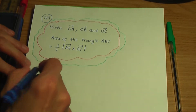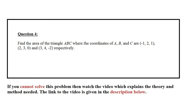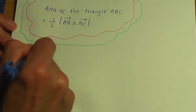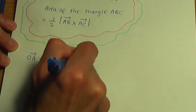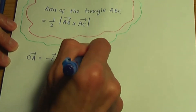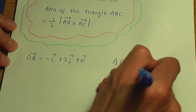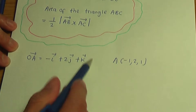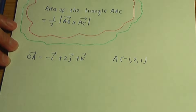Let's work out the vectors AB and AC. Going back to the screenshot, we have A, B and C in coordinate form. A is written as the point minus 1, 2, 1. Going back to the paper and pen, that means that the vector OA is minus I plus 2J plus K. You can write that in IJK form or as a column vector, whatever you prefer.